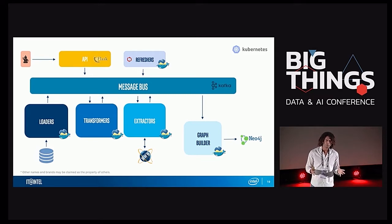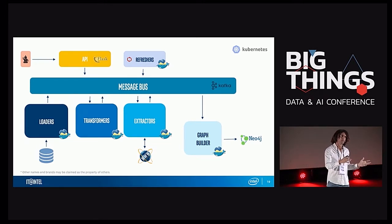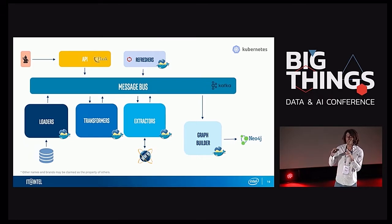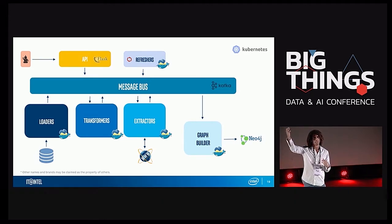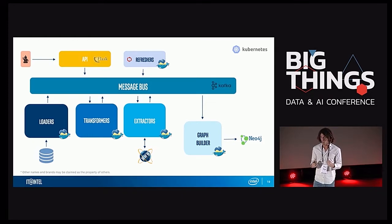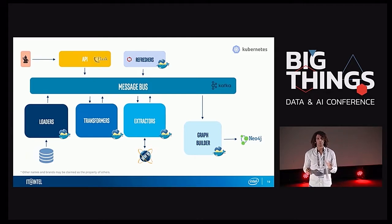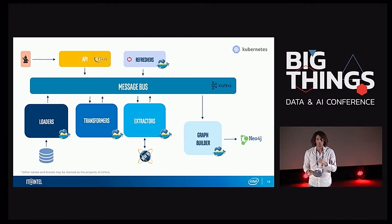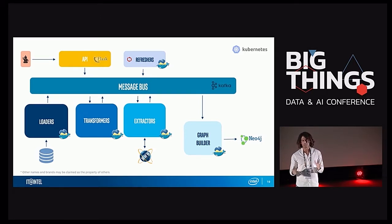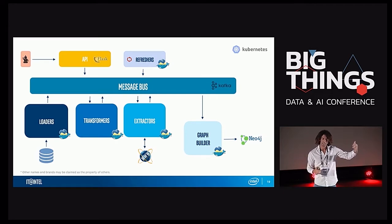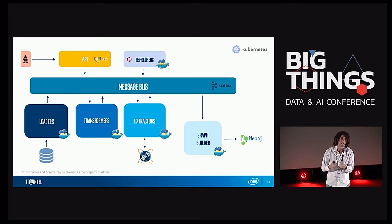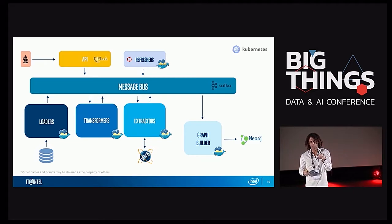The components are these: for loading internal information we created the loaders; to transform information into graph formations we created the transformers; to go out to the world and enrich our data we created the extractors; and to save everything into a graph database we created the graph builder — in our case we chose Neo4j. On top of that, to keep data relevant, we created the refreshers. Everything that goes into the system must pass the message bus. We also created an ad hoc API for analytical models to have access to the system in order to add their own edges or update existing edges and nodes.